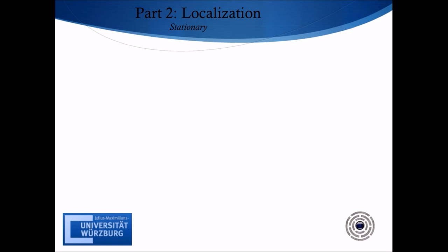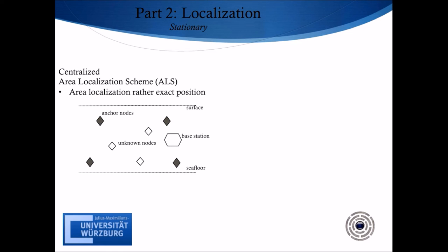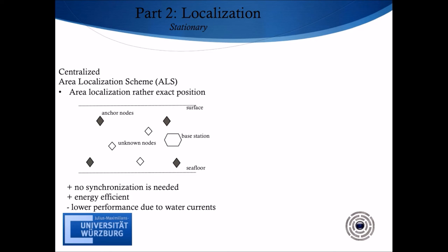The first technique in the stationary and centralized localization is called the Area Localization Scheme (ALS). ALS estimates the position of every unknown node within an area, rather than its exact localization. Anchor nodes send signals with different power levels to localize unknown nodes, which listen to these signals and note the IDs of every anchor node at their appropriate power levels. This information is then sent to a base station, which is assumed to know the positions of anchor nodes, so that with complex calculations a localization map of unknown nodes can be created. The benefit of this technique is that there is no need for any synchronization task, and it saves energy of unknown nodes because all calculations are done by the base station. But performance can get lower if anchor node positions change due to water currents, and it cannot be used for applications with high accuracy demands.